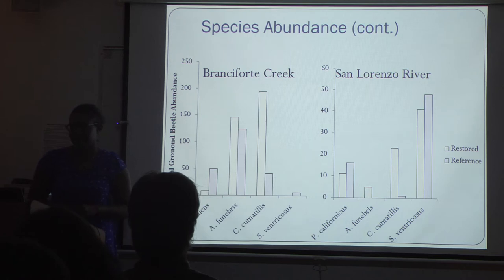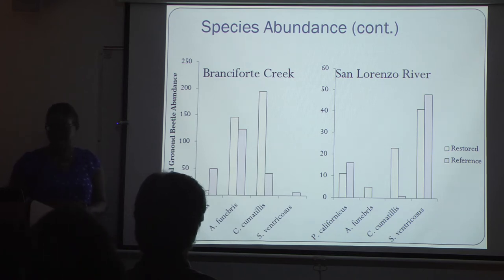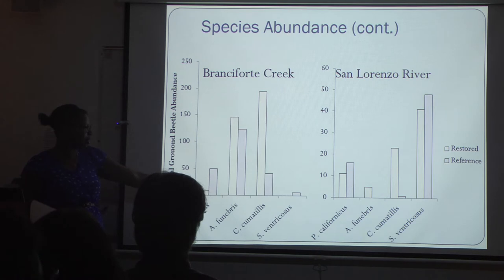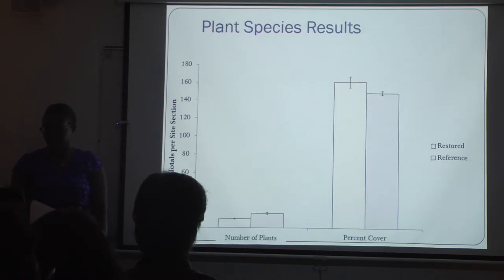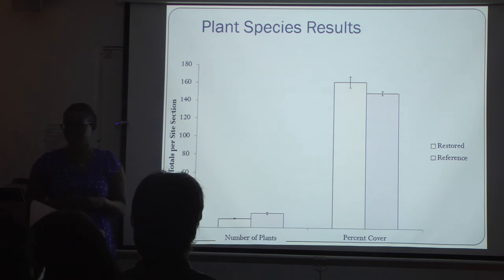Both sites at Brenza Forty Creek and the San Lorenzo River had the same species compositions in site type comparisons. A. funiburus and C. chemotillus had higher abundances in the restored sites than the reference sites. B. californicus and S. ventricosis were both greater in the reference sites than the restored sites. The total number of plants per site section in all three sites was greater in the restored than the reference sites, and the total plant cover of all plant species was greater in the restored compared to the reference sites.